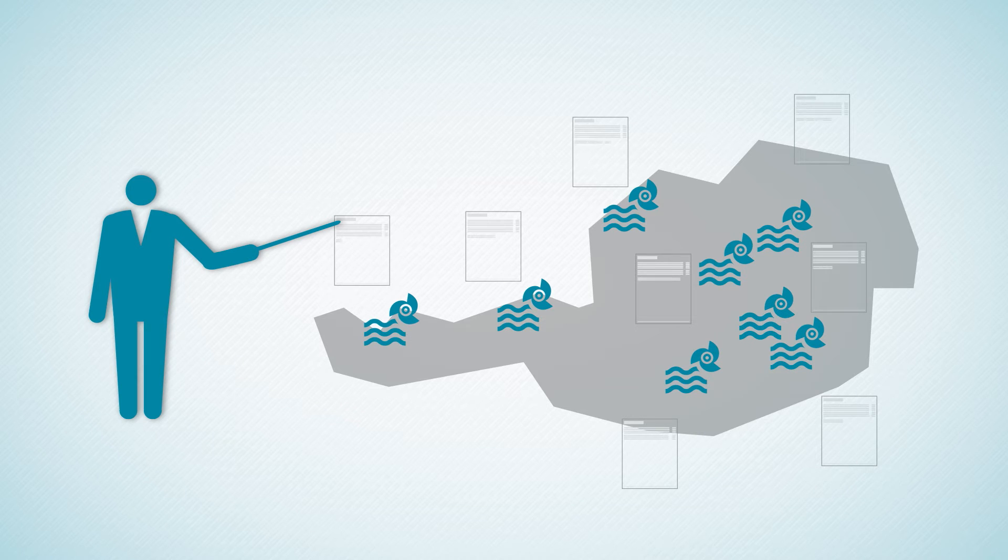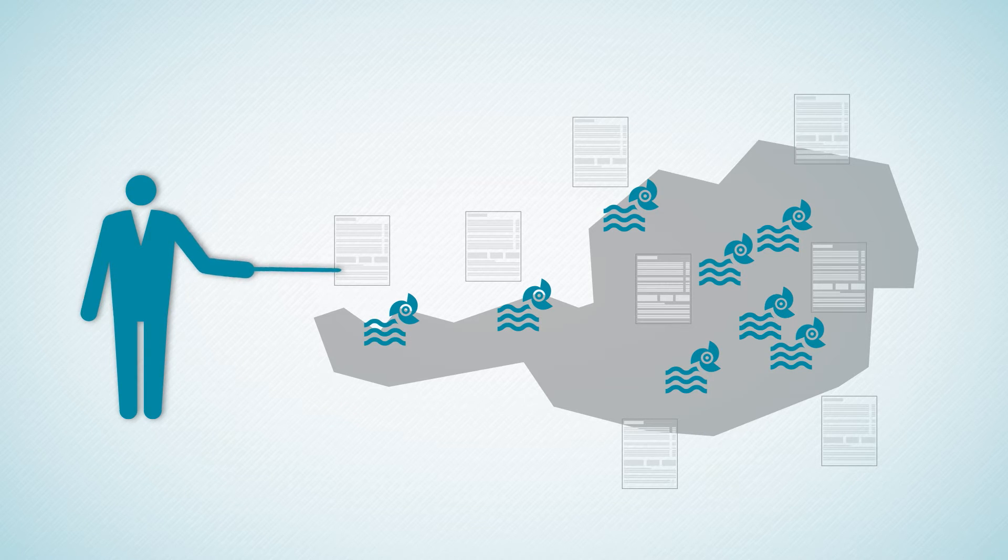For each power plant, there is a set of officially authorized operational instructions, the so-called rules of weir operation. These rules clearly regulate the water levels to be operated in the impoundment area.